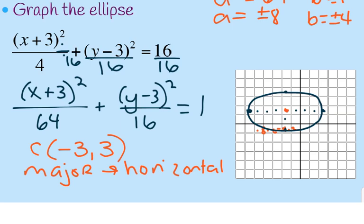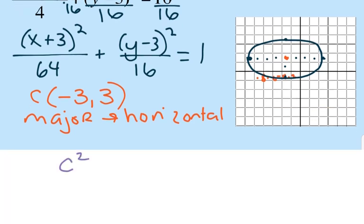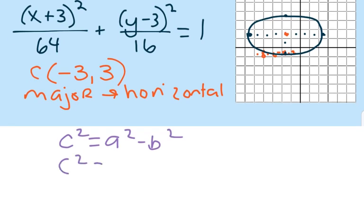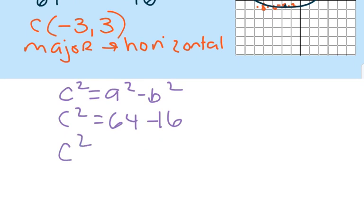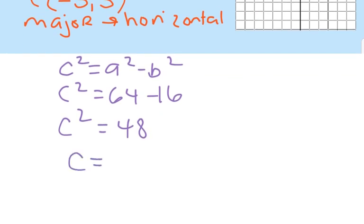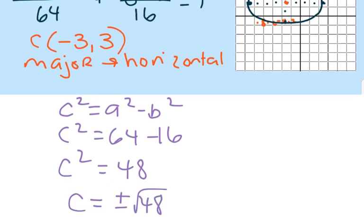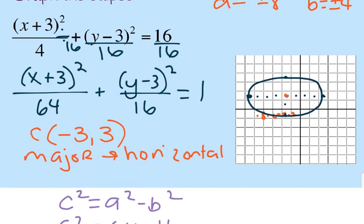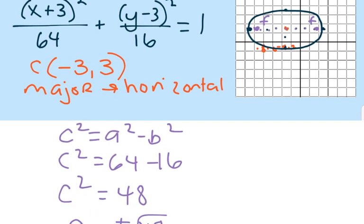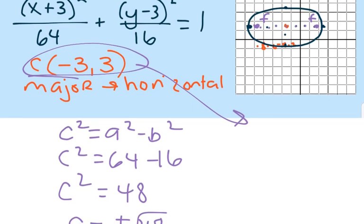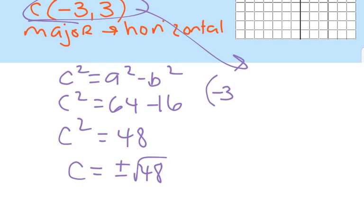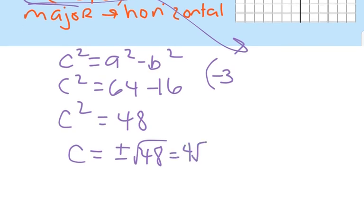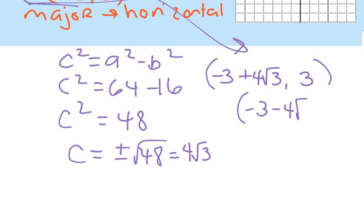The foci are on the horizontal axis. c-squared equals a-squared minus b-squared equals 64 minus 16 equals 48, so c equals plus or minus √48, which is 4√3 — about 6.8. From my center, this time the x changes and the y stays the same. So the foci are at (-3 + 4√3, 3) and (-3 - 4√3, 3).